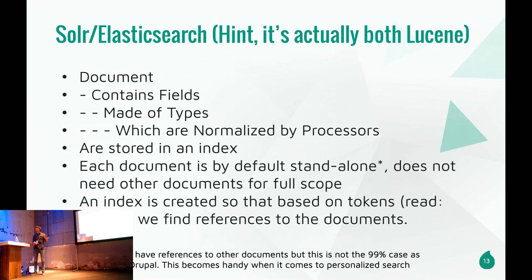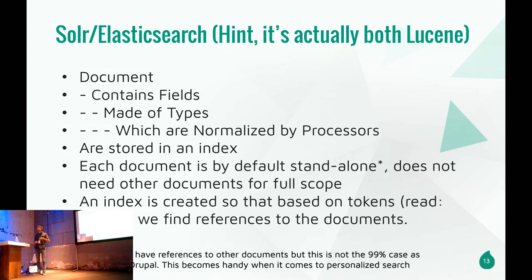A document contains fields; a field is made of a type and normalized by a processor. For example, a long Dutch medical compound word like 'oorloon supplement' — the processor knows how to split it so that searching for 'supplement' finds 'oorloon supplement'. It sounds easy, but it means your machine has to understand language — that's natural language processing. This is why you use Solr and Elasticsearch, which are actually the same engine with a different API. One is from the Apache Foundation, one from a company, but they're the same underlying engine.